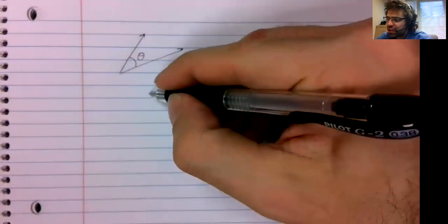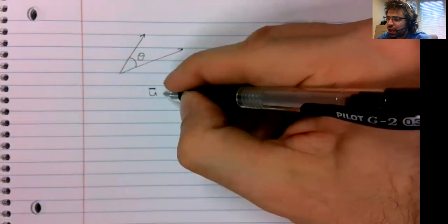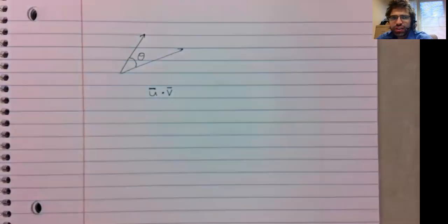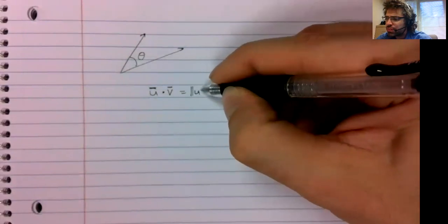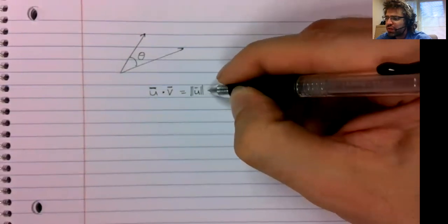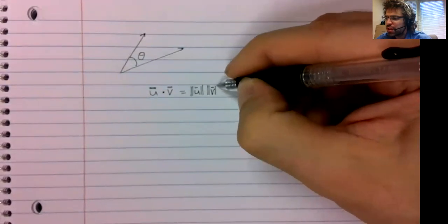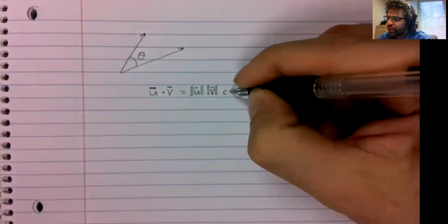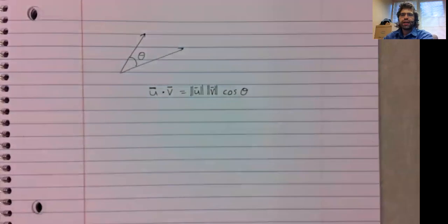And we can state it as a definition in higher dimensions that the dot product of two vectors is the norm of the first vector times the norm of the second vector times the cosine of the angle between the vectors.